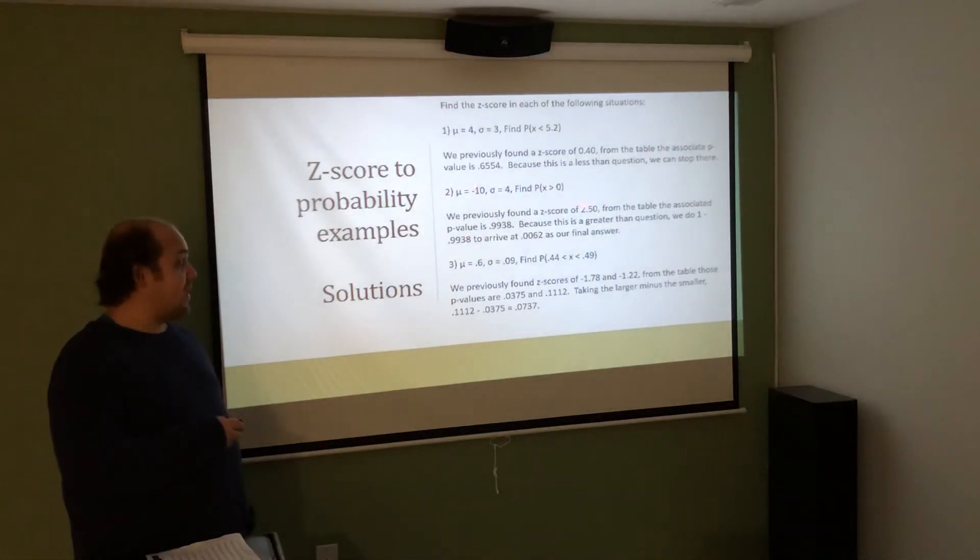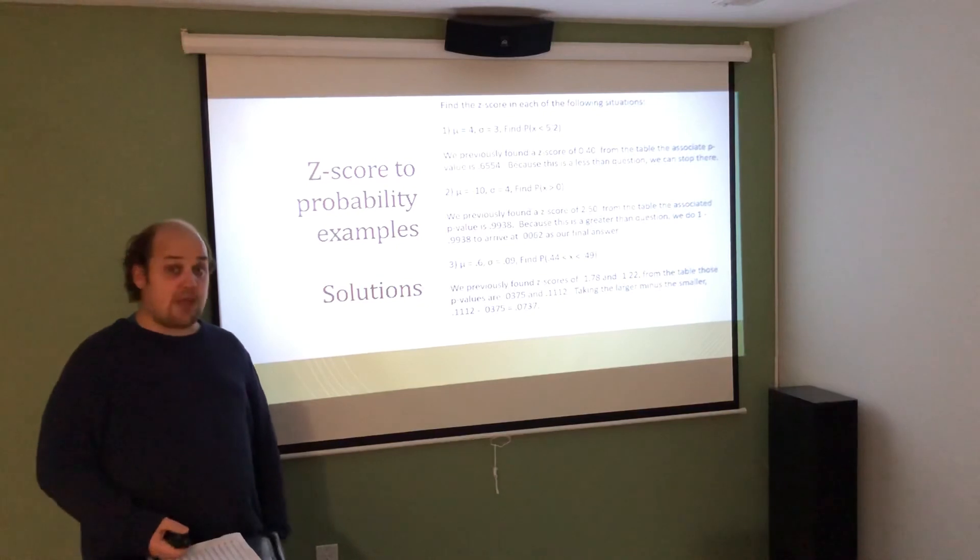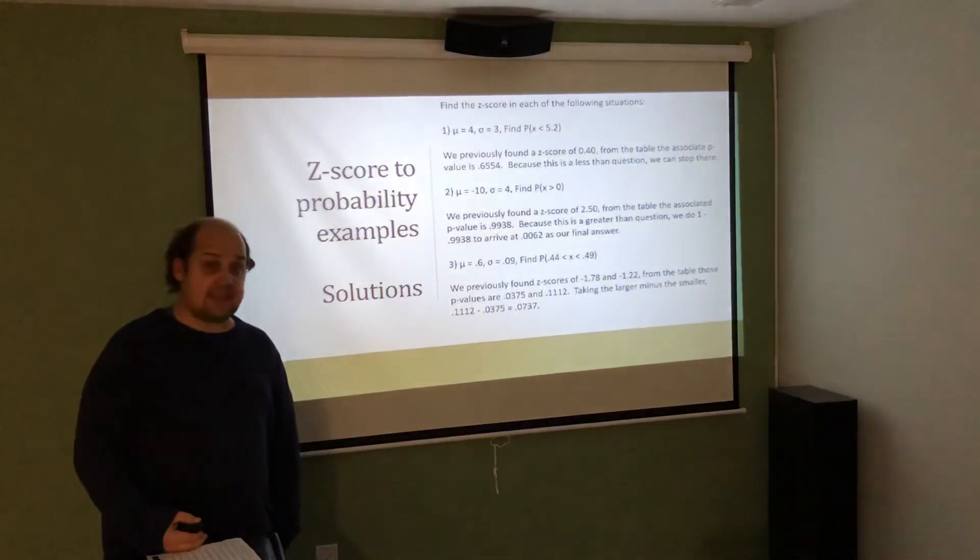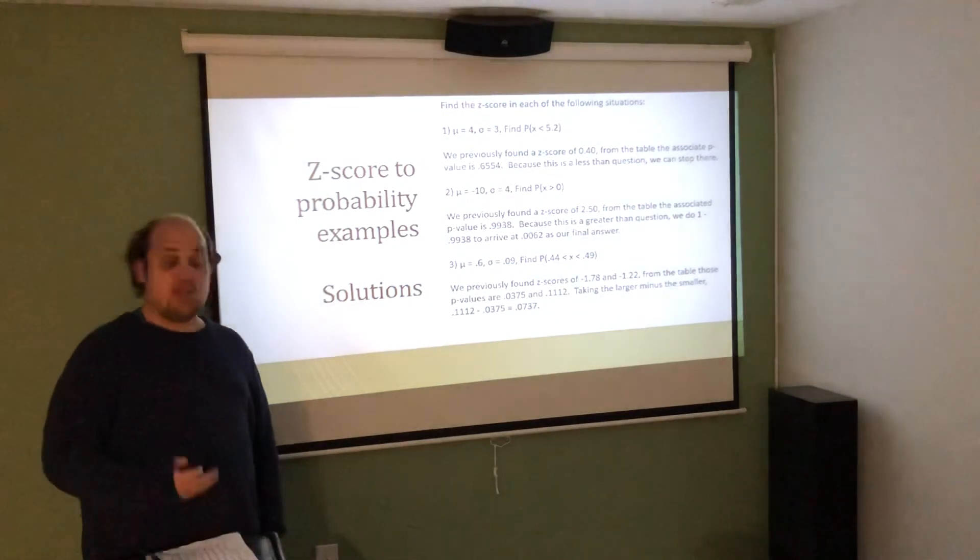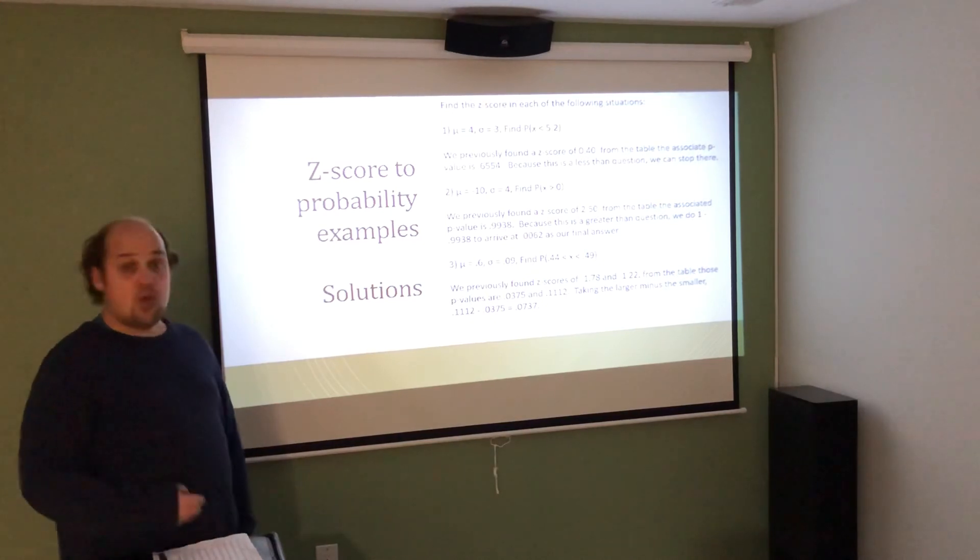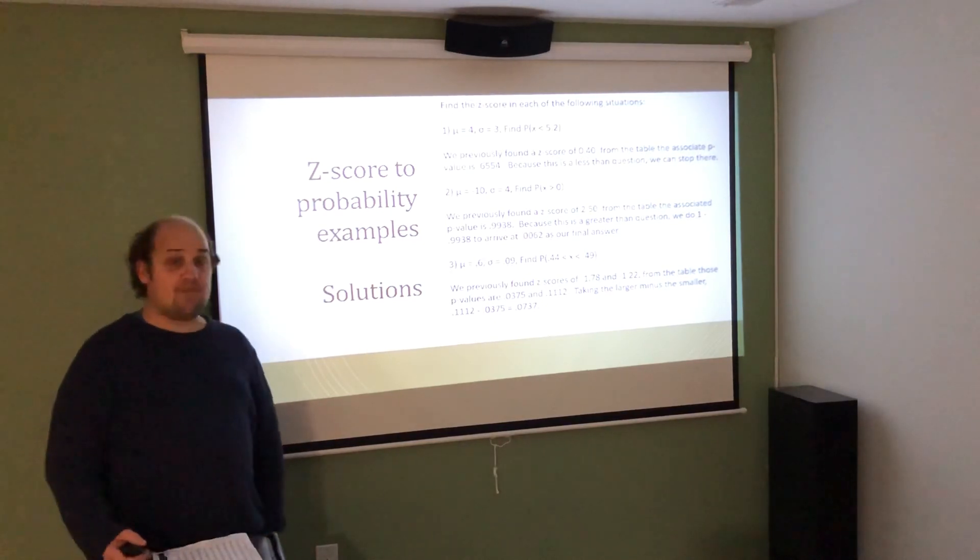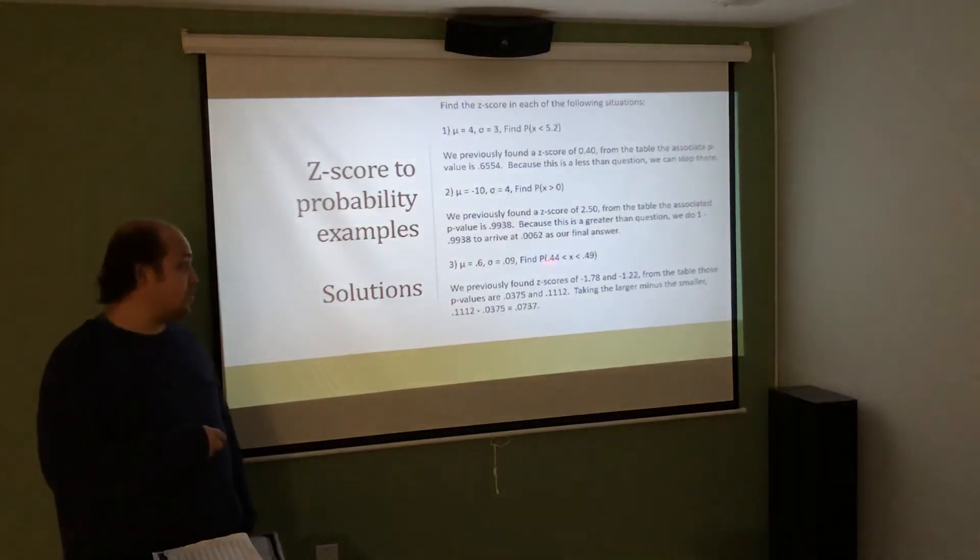In problem two, we found the Z score of 2.50. The table value for 2.50 is 0.9938. Because it's a more than question, I can't just report the value I find in the table. Instead, because the table always tells me to the left, to do more than or to the right, I need to do 1 minus that table value. If I did 1 minus 0.9938, I would get an answer of 0.0062, which is the correct probability of getting something more than a Z score of 2.50.